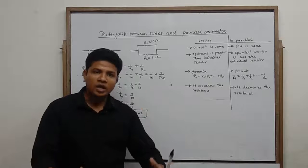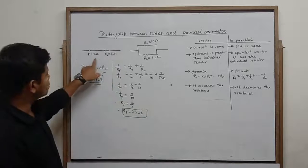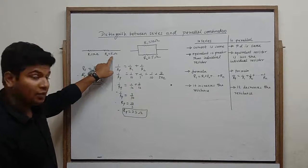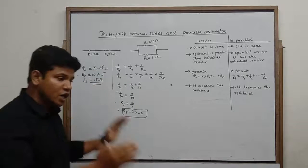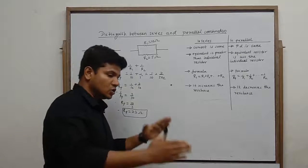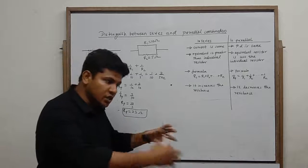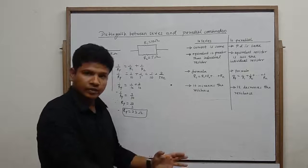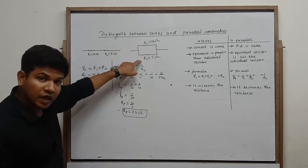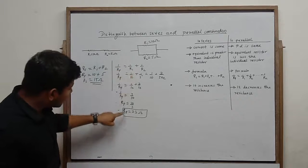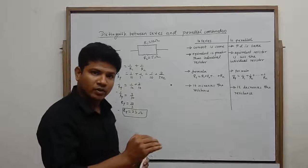Series connection बढ़ा देता है circuit के resistance को। 10 ohm और 5 ohm मिलकर 15 ohms हो गया — resistance बढ़ गया। वहीं अगर दो resistors को parallel में connect किया, तो circuit का total resistance सिर्फ 3.3 ohm हो गया — resistance कम हो गया।